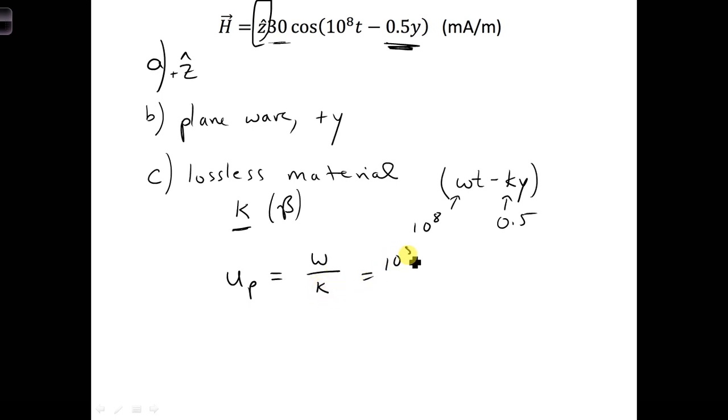So put in 10 to the eighth, and 0.5, and we get 2 times 10 to the eighth meters per second. So a bit slower than the speed of light.